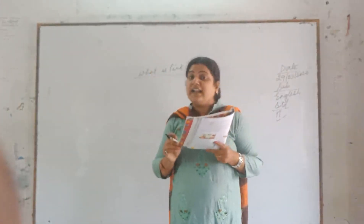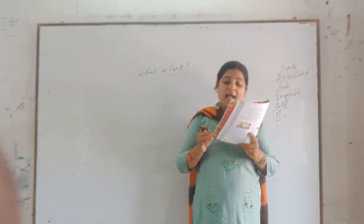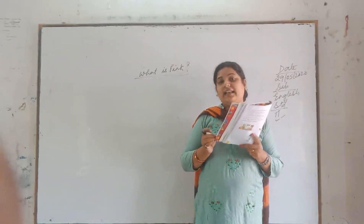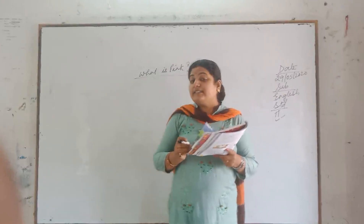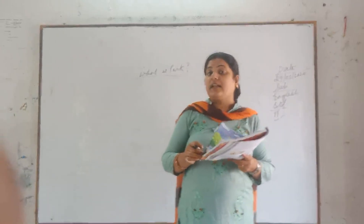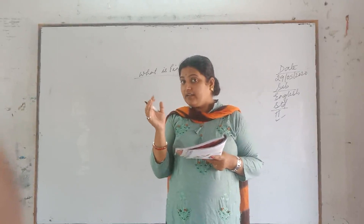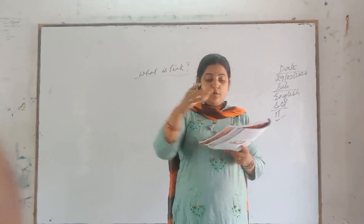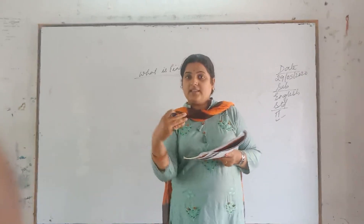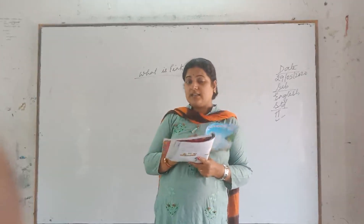What is white? Ujhla kya hai? A swan is white, sailing in the light. What is white? A swan is white, sailing in the light.